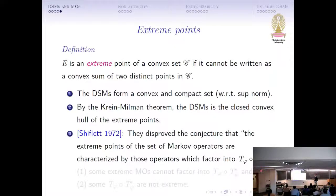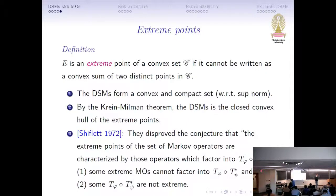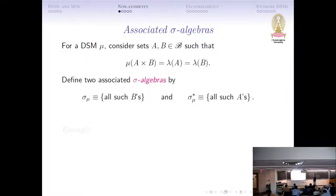Then in 1972, Shiflet disproved the conjecture that the extreme points of the set of Markov operators are characterized by those operators which factor into a left times right. This is not true, and they disproved it by constructing two examples. One is an extreme Markov operator that cannot be factored into this left times right. The other direction is they construct a left times right that is not extreme — so they don't have anything to do with the other. But we're going to come back to this later at the very end.